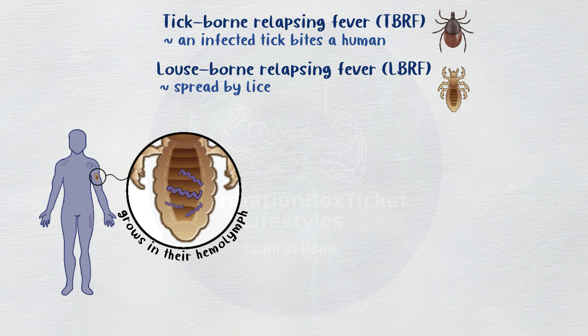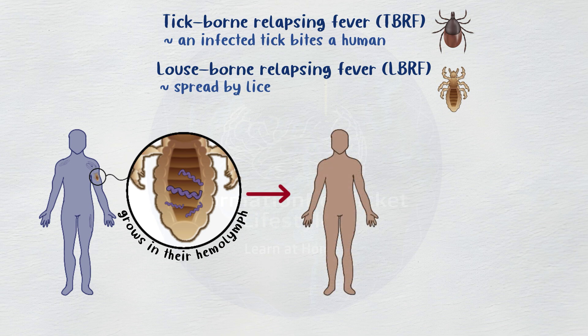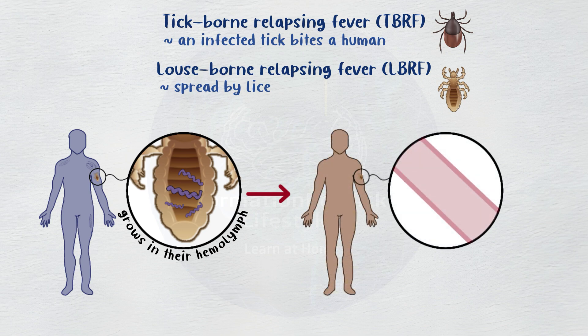Subsequently, uninfected humans may become the food source for infected lice, and when a person scratches or crushes the louse's feeding region, the bacterium gets into their circulation.